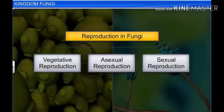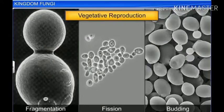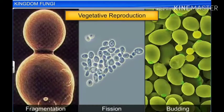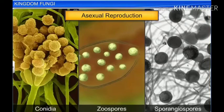Fungi can reproduce vegetatively, asexually, as well as sexually. Fungi reproduce vegetatively by fragmentation, fission, and budding. They can reproduce asexually by either one of the following spores: conidia, zoospores, or sporangiospores.